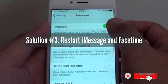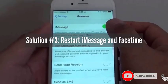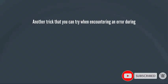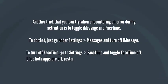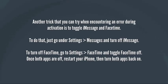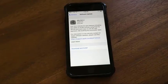Solution 3: Restart iMessage and FaceTime. A useful trick when encountering an activation error is to toggle iMessage and FaceTime. Go to Settings, then Messages, and turn off iMessage. Next, go to Settings, then FaceTime, and toggle FaceTime off. Once both apps are off, restart your iPhone, then turn both apps back on.